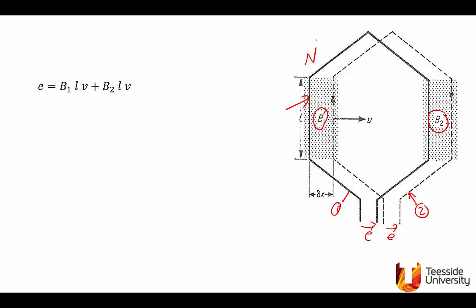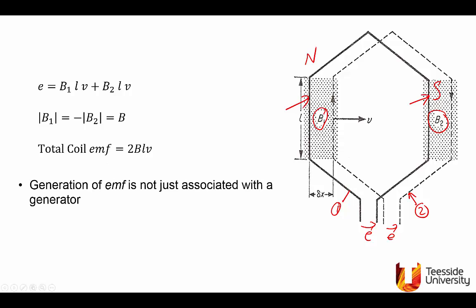What we do in machines is we arrange that when one coil side is under, let's say, a north pole, the other coil side is under a south pole. So B1 and B2 are equal in magnitude but opposite in sign. B1 magnitude equals minus the magnitude of B2 equals B. Substitute in this equation, the total EMF in the coil will be 2 B L V. So although the EMF direction is reversed because of the reversal of the flux, when they add up around the coil, they add up to 2 BLV.